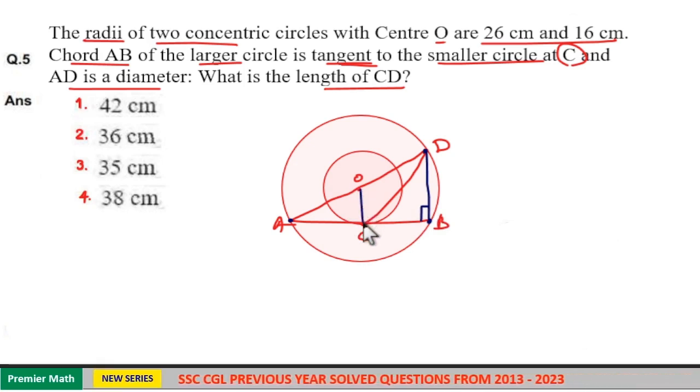Same way, radius creates 90 degrees with the tangent. And here, radius of smaller circle is 16, and this is AO, radius of larger circle which is 26. So this is also 26.